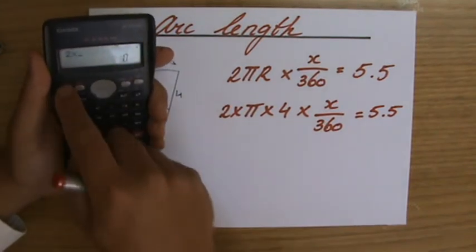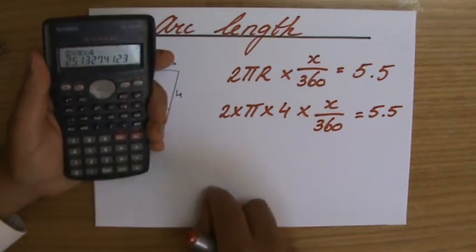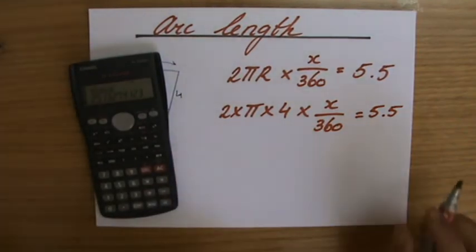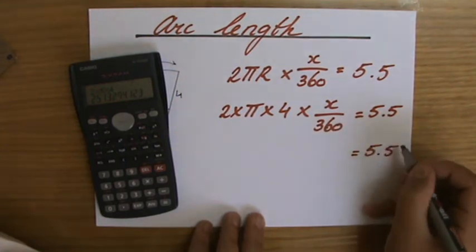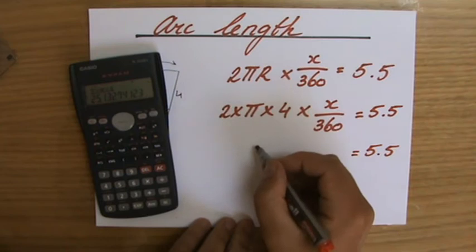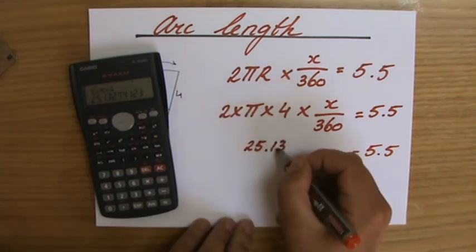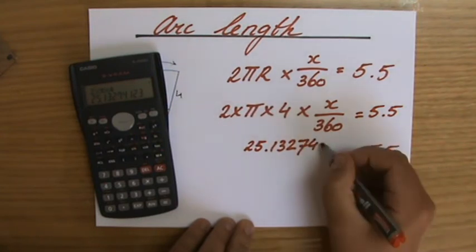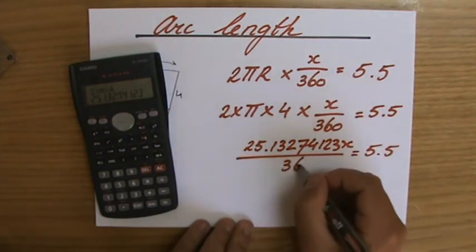2 times π times 4 equals... Now, I'm not saying you have to follow this path, yeah, but that's what I'm doing anyway. And equals 5.5. I get all these numbers. I'm going to write them all down. It's 25.13274123 times x out of 360.